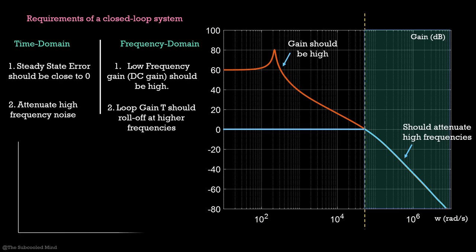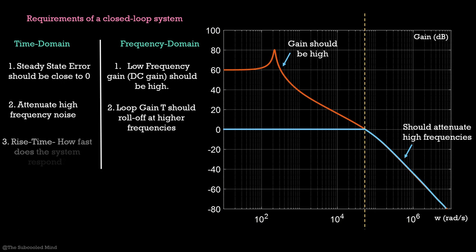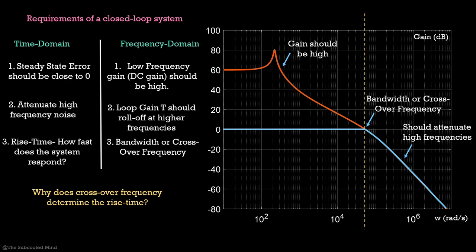Let us see the third requirement. The rise time of the system. How much time does it take for the output to match the reference? That is, how fast is our system? In terms of frequency response, this is given by the bandwidth or the crossover frequency. This is the frequency when loop gain T crosses a 0 dB mark and the output no longer follows the reference. But why does bandwidth determine how fast the system should rise? This is because the output can track the reference for only frequencies lesser than the crossover frequency and hence, it can only rise as fast as those frequencies allow.